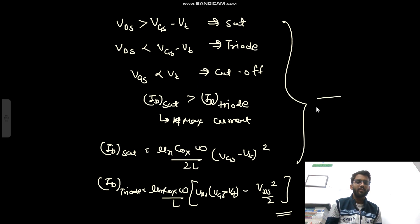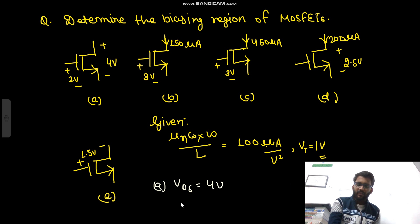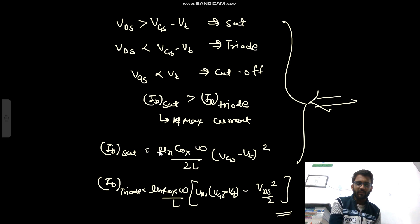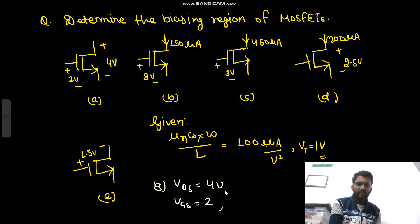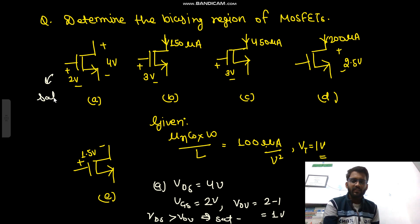For example A: VDS is 4 volts and VGS is 2 volts. We define V_overdrive as VGS minus Vt, so V_overdrive equals 2 minus 1, which is 1 volt. Since VDS (4V) is greater than V_overdrive (1V), this MOSFET is in the saturation region.